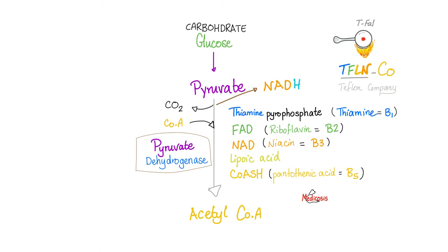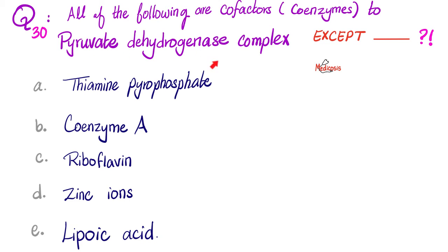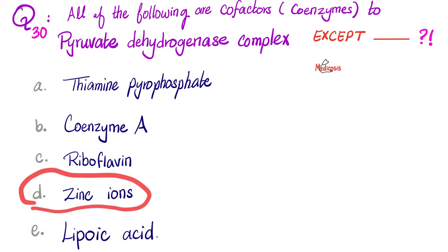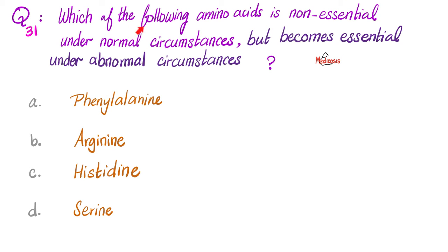L = lipoic acid, and CO = coenzyme A (CoASH) — thank vitamin B5 or pantothenic acid for that. So this complex requires TPP, CoA, riboflavin, and lipoic acid, but zinc is the least likely to be needed here. The same five cofactors apply to the alpha-ketoglutarate dehydrogenase complex in the TCA cycle — both enzymes use the same mnemonic: TEFLON COMPANY.